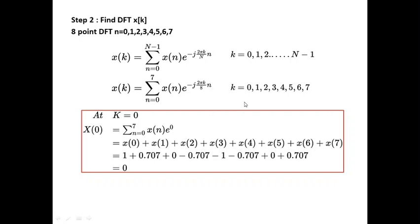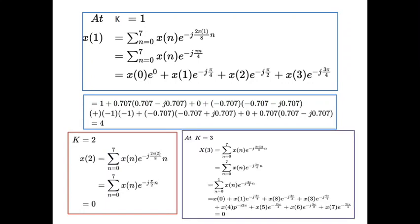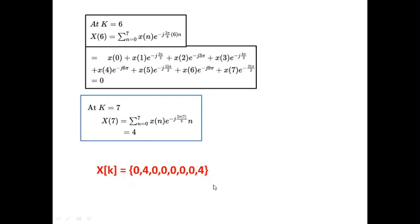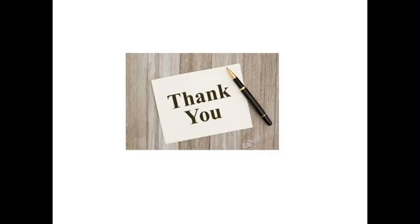For k = 0 through k = 7, you perform the simplification. You can pause the video, do it yourself, and verify. For each k, apply Euler's identity and perform the mathematical calculations to get X(k). Finally you get the X(k) values — this is the method by which you find the DFT. As practice problems, compute the 4-point DFT of (−1)^n and of sin(nπ/2). Next class, we will see how to compute DFT using the matrix method. Thank you, students.